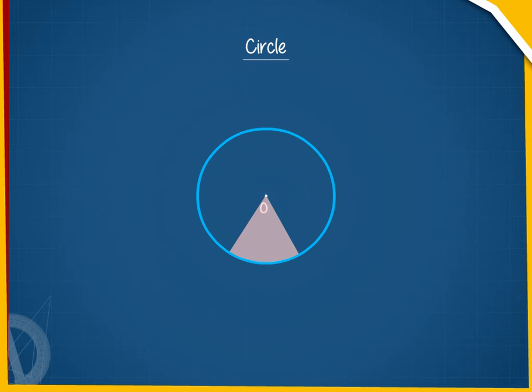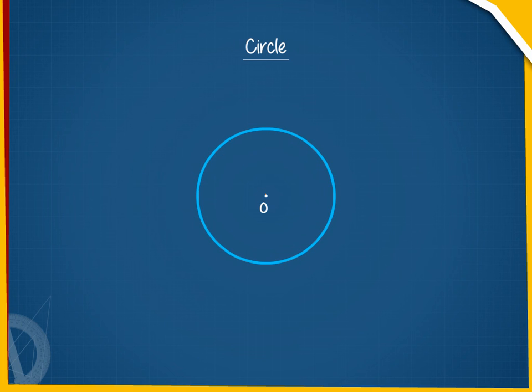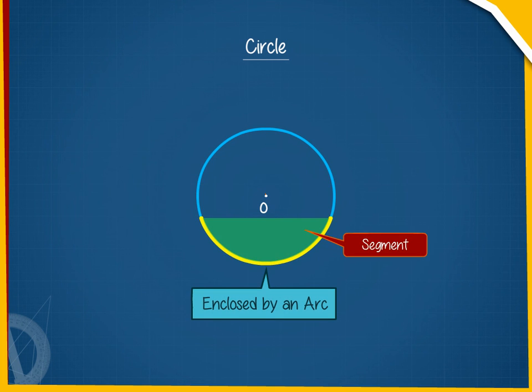a region inside a circle enclosed by an arc on one side and a pair of radii on the other two sides is called a sector of the circle. A region inside a circle enclosed by an arc and a chord is called a segment of the circle.